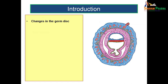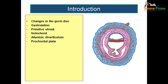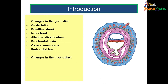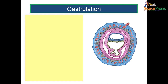In this session, we will be seeing the changes happening in the germ disc under the following headings: changes in the trophoblasts, gastrulation, the formation of primitive streak, the formation of notochord, the formation of allantoic diverticulum, the formation of pre-cordal plate, the cloacal membrane and its fate, and pericardial bar. Simultaneously, the trophoblast also undergoes development. Towards the end, we will see the applied aspects of the third week of intrauterine period.